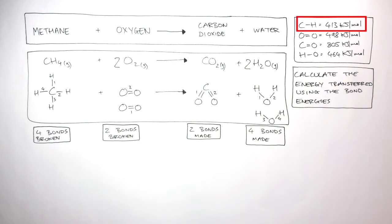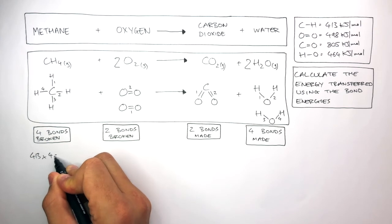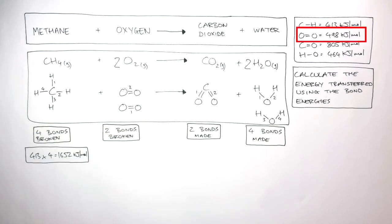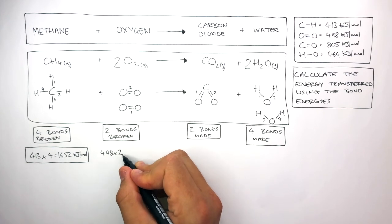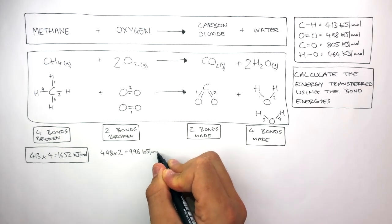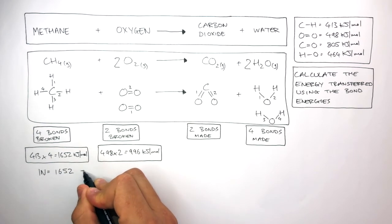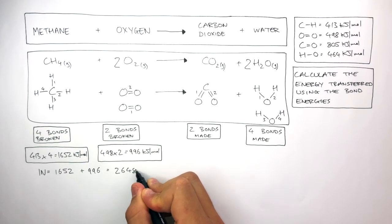The bond energy of the C-H bond is 413 kilojoules per mole, so we write 413 times four because there are four bonds — this equals 1652 kilojoules per mole. The bond energy for the O=O double bond is 498 kilojoules per mole, so we write 498 times two because there are two of these bonds — this equals 996 kilojoules per mole. So the total energy in equals 1652 plus 996, which equals 2648 kilojoules per mole.